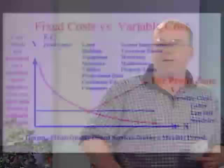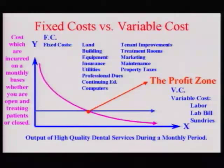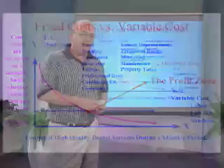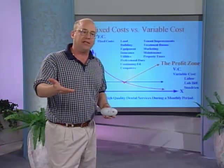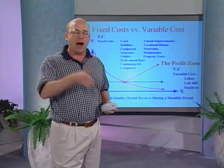Your fixed costs — land, building, equipment, insurance, utilities, professional dues, continuing ed, computers, tenant improvements, treatment rooms, marketing, maintenance, property taxes — divided by 16 days gives you what you have to do every day just for fixed costs. Then to find out when you have profit: profit is only above your variable costs. Variable costs — labor, lab, and sundries — are your costs that go up or down directly proportional to the amount of activity in your office. If you do twice as many crowns, your lab bills and sundries double.